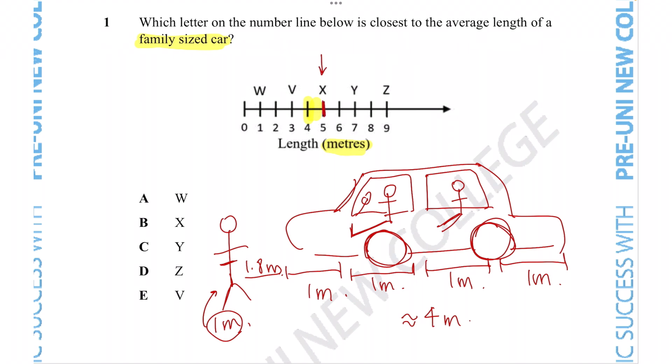So I think the correct answer would have to be closer to five meters than three meters, so that would mean that the letter X is the representative of five meters on this specific number line since it's the letter directly above the increment for the number five. Therefore the correct answer here would be option B.